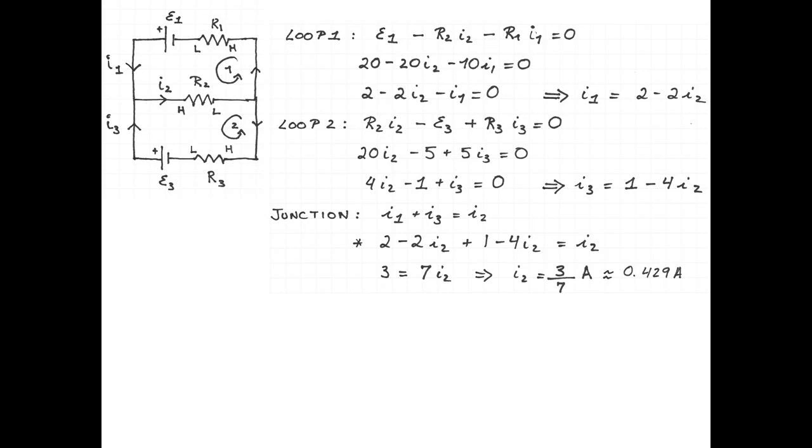I1 is 2 minus 2I2. So that's 14 over 7 minus 6 over 7. I1 is 8 over 7 amperes, approximately 1.14 amperes. I3 is 1 minus 4I2. That's 7 over 7 minus 12 over 7. So I3 is minus 5 over 7 amperes, or approximately negative 0.714 amperes.